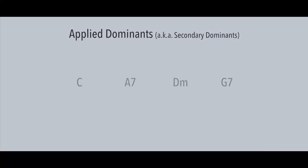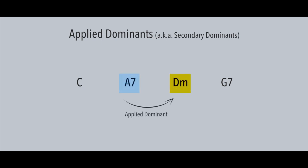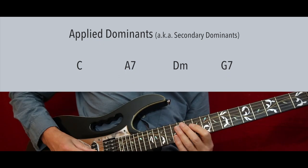If we look at the next chord progression, we see a C chord, an A7 chord, a D minor chord, and a G7 chord. The A7 chord is the applied dominant for the D minor chord. So over the A7 chord, we can play an A Phrygian dominant scale. You could see this as a D harmonic minor scale starting on the 5th note — the note A — creating an A Phrygian dominant scale.